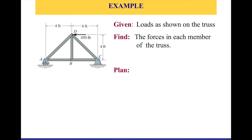This is an example that we are going to try to solve together. We have a truss system shown in the schematic in front of you. We are given the loads as shown on the truss — we have only one external load, which is the 450 pounds acting to the left on joint D. We also have the support reactions at A and C. This is a two-dimensional problem, so we have a roller and a pin.